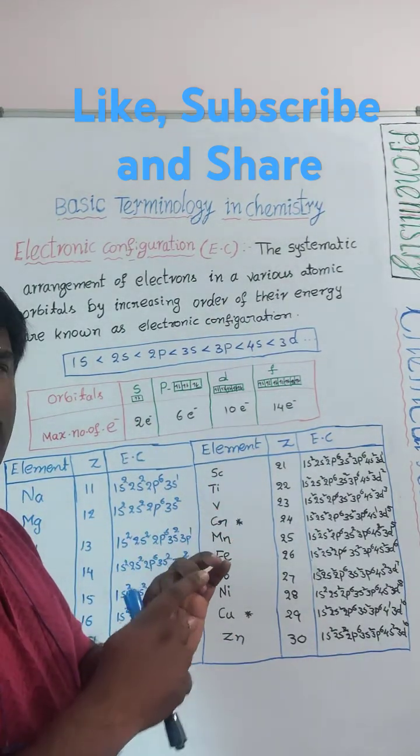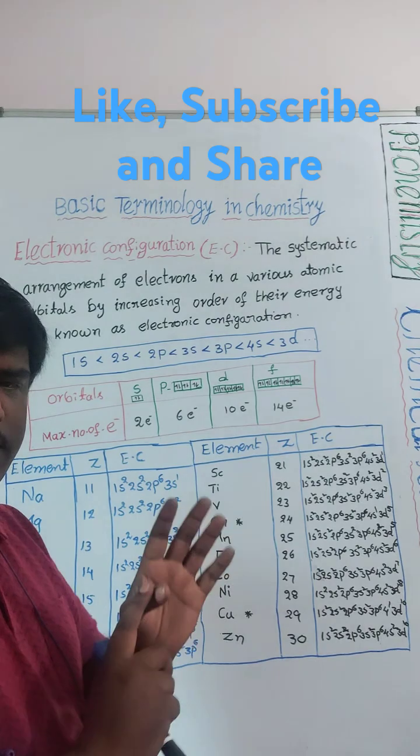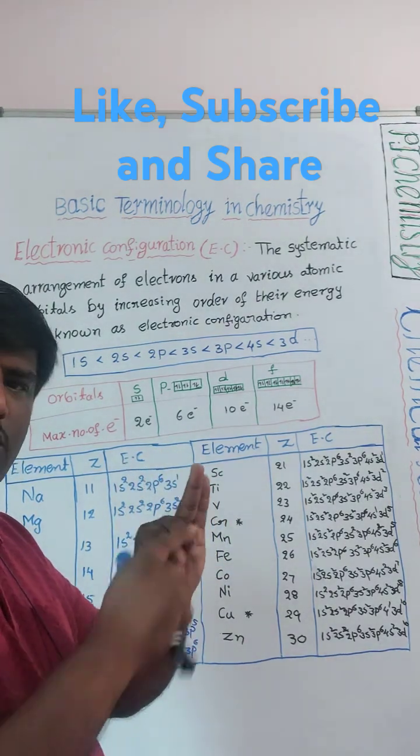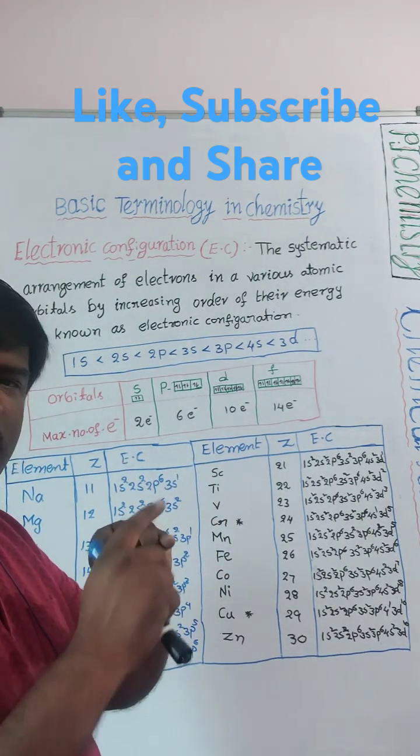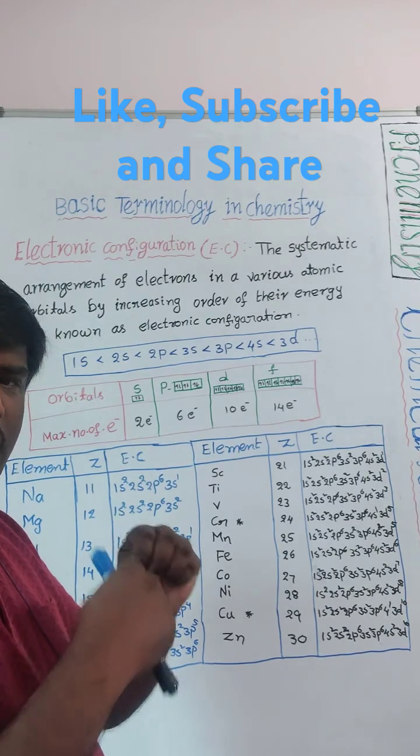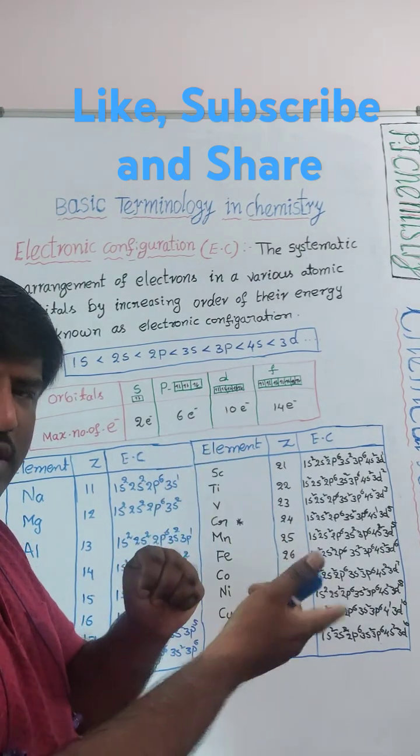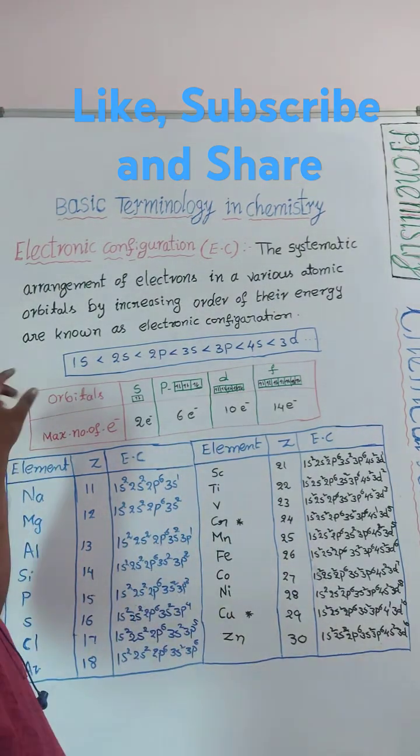Shell wise: 1s in the first shell, 2s and 2p in the 2nd shell, 3s and 3p in the 3rd shell, then 4s after 3d as per the energy diagram.